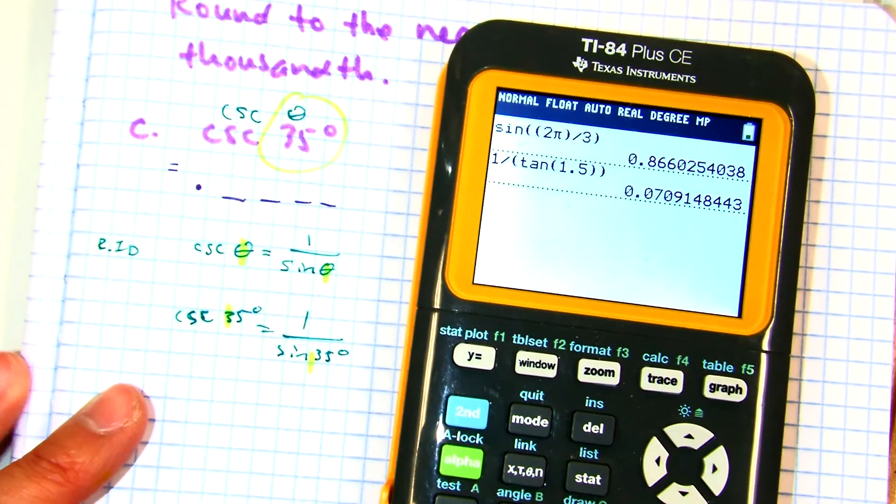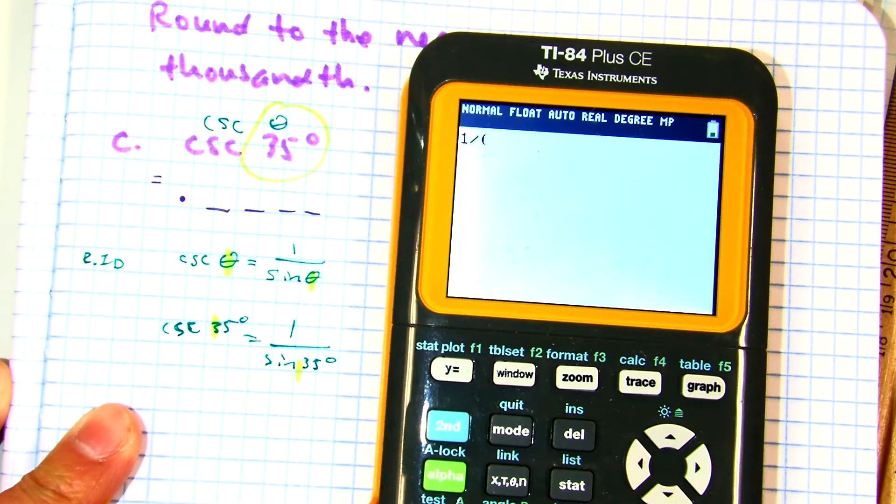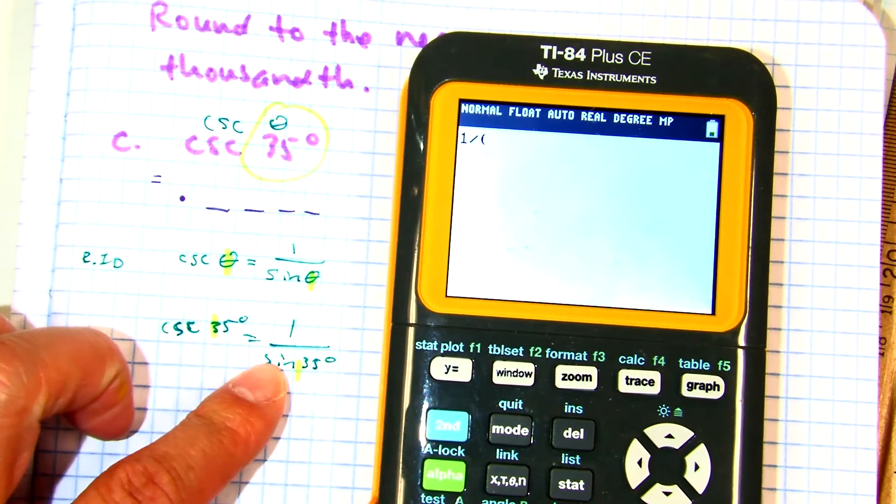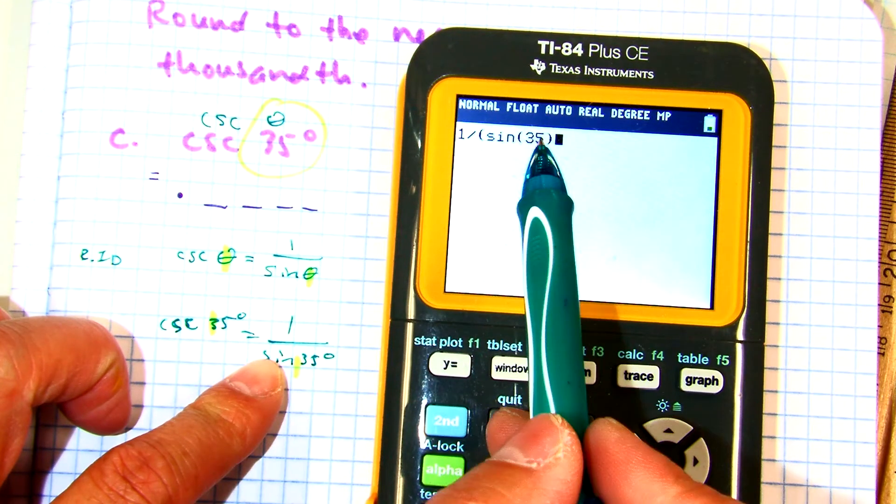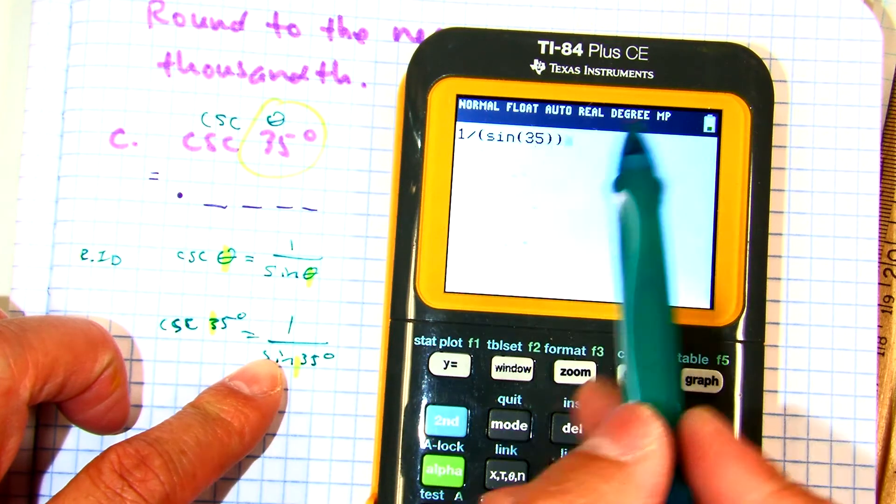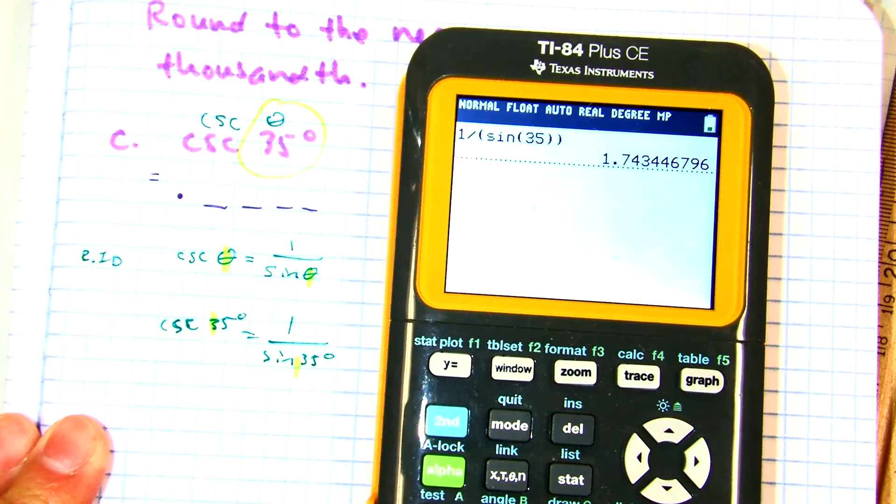So now, let's put that into my calculator. Yesterday, we learned about using an extra set of parentheses. Sine of 35. Remember, that angle there is already in degrees, so I don't have to write a degrees symbol. And I get this as my answer.